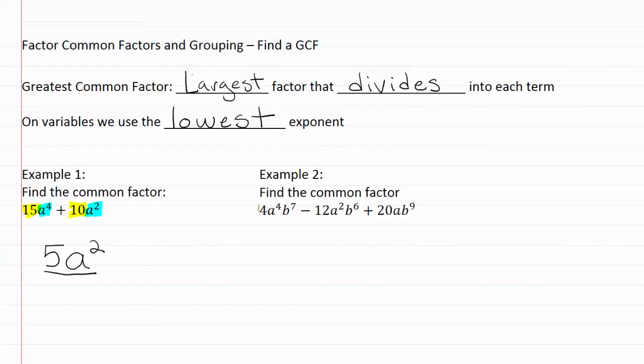Again let's start by looking at our coefficients, the numbers out in front. It looks like in this case these are all multiples of four, and there's nothing bigger that can divide into each of these. So four is going to be the number in our GCF.